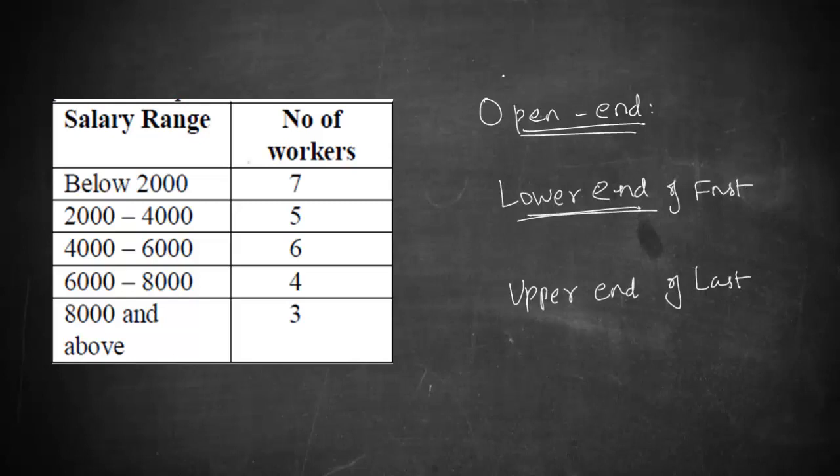If you look at this table, the first class says it is below 2000. Here this table does not give you what is the lower limit. Similarly this class, the last class, does not give you the upper limit. It just says or it just talks about 8000 but it does not talk about the upper limit. So, this is an example for open-end classes.